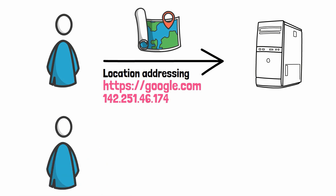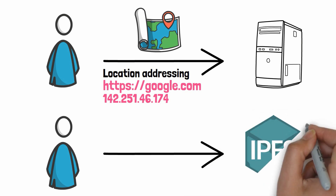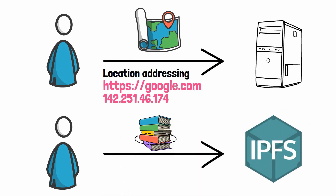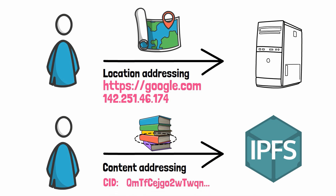When you want a resource on IPFS, you say: hey IPFS, give me this resource. You specify the resource, not the location. That's what we call content-based addressing. Technically, we do this with an identifier called CID. It's a string of characters that looks like this. The CID is the equivalent of a URL, but for IPFS.